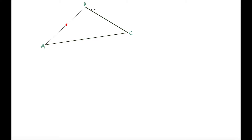We can do the same thing with line segment BC. We find the midpoint of BC, and that point splits BC into two equal sized parts. The mid-segment theorem says that if we draw a line between these two midpoints — joining the midpoints of AB and BC — that line will be parallel to the other side and will be half the length of the other side.